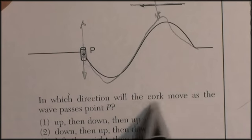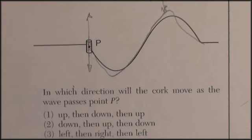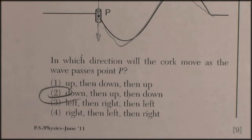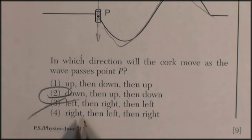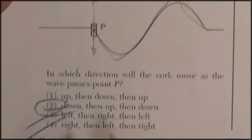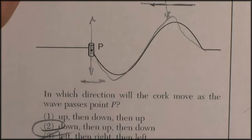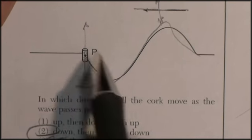In which direction will the cork move as the wave passes? Down, then up, then down. There it is. Definitely not left and right—that would be a longitudinal wave, parallel to the direction.